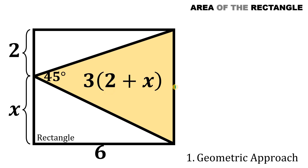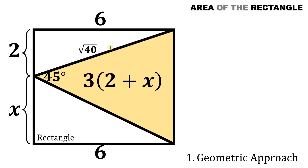We will use the fact that this length is also equal to 6 because this is a rectangle. Using the Pythagorean theorem, we get the hypotenuse as the square root of (2² + 6²), equal to the square root of (4 + 36), which is the square root of 40. Now let's drop a perpendicular line to this point, because this is a 45-45-90 right triangle, and since it is a 45-45-90 right triangle, it is also an isosceles right triangle, so these two sides are equal.